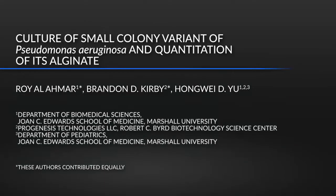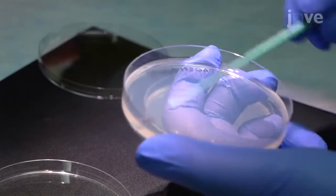The small colony variant, or SCV, technique allows for selection and growth of small colony variants of Pseudomonas aeruginosa. The method is very definitive and allows for easier selection than normal methods.